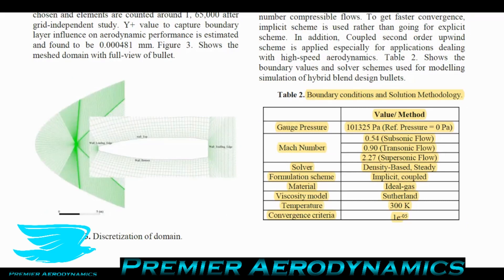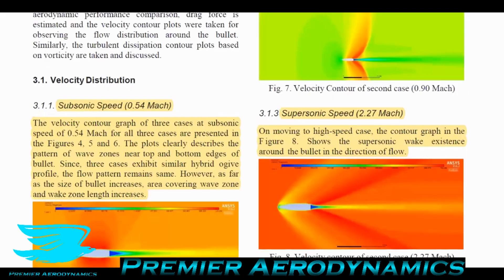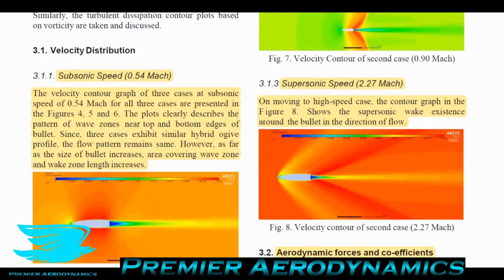They looked at Mach numbers of 0.54 classified as subsonic, 0.9 transonic, and 2.27 supersonic flow. The 0.9 Mach number is considered transonic because that's when you can get the critical Mach number happening. Critical Mach number determines when there is supersonic or sonic flow over an object. The object can be traveling at 0.8 Mach but because of curved surfaces that accelerate the flow, you can reach a localized Mach number of one at certain points.